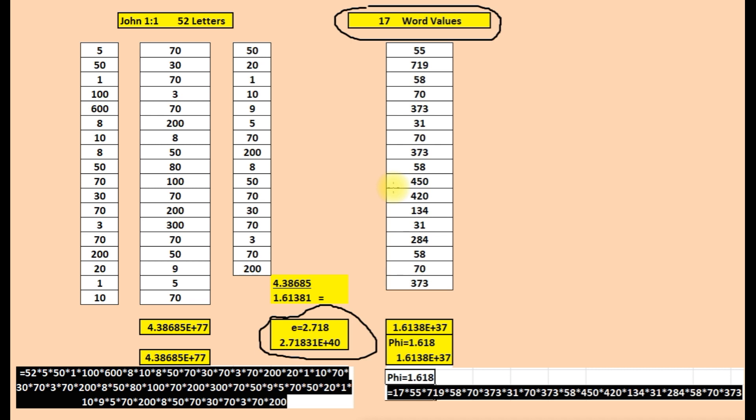We will show that the natural log of the earth, moon, and sun can be used—a natural log value, the e constant natural logarithm.